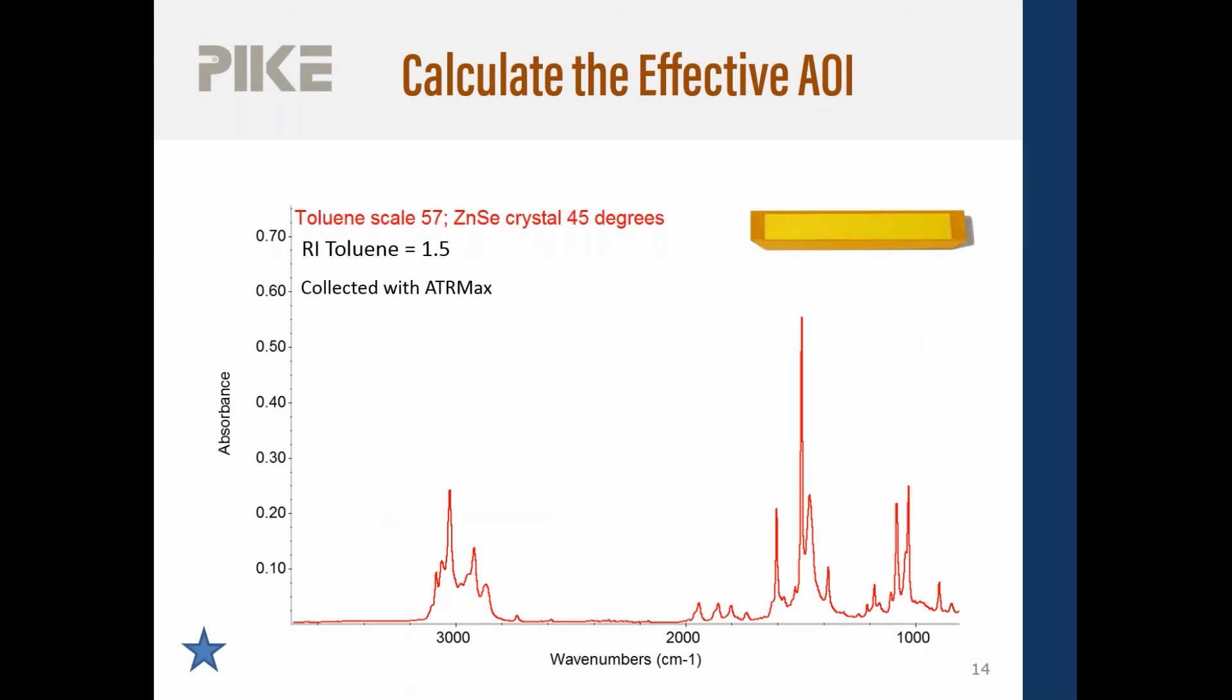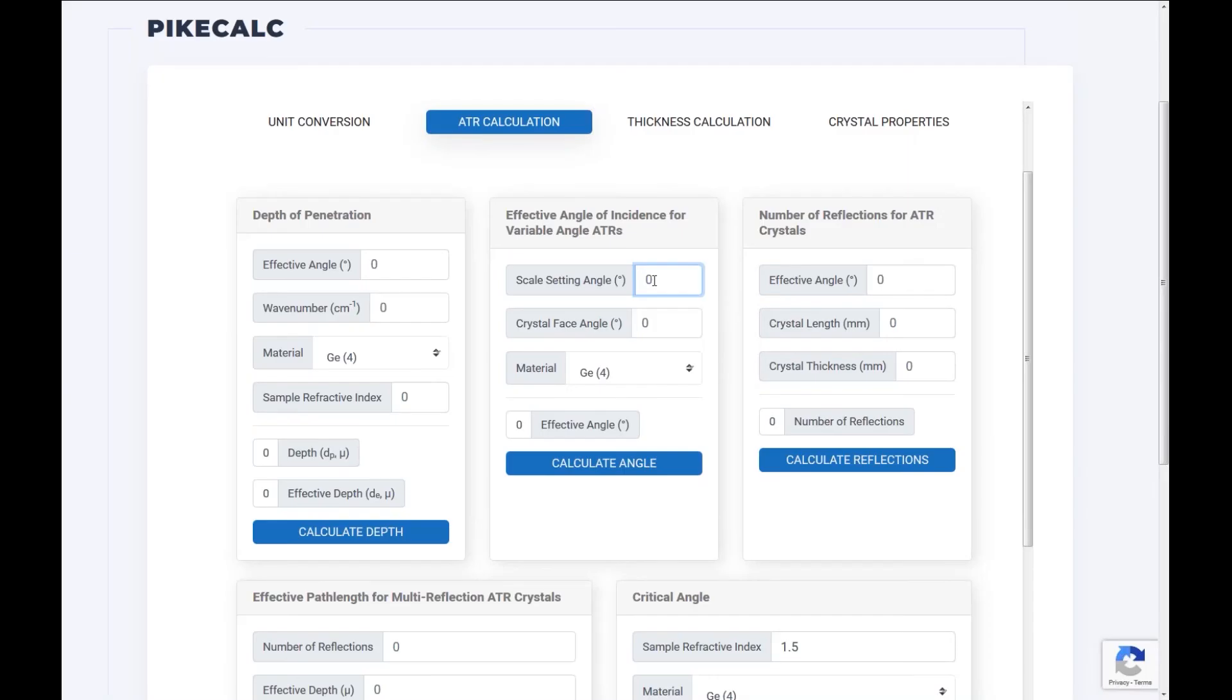Okay, so here's a spectrum of toluene collected with the ATR max. ATR max is a variable multiple reflection angle ATR. I used a face angle crystal of 45 degrees, and I had the V max setting at 57. So let's go and calculate this effective angle of incidence. So in this case, we said the accessory set at 57. I used a 45 degree base angled crystal.